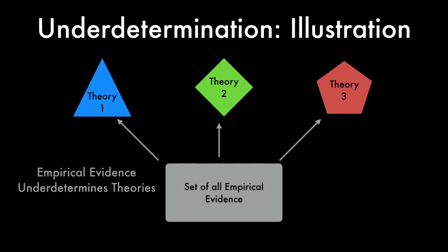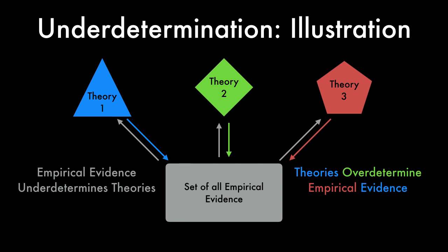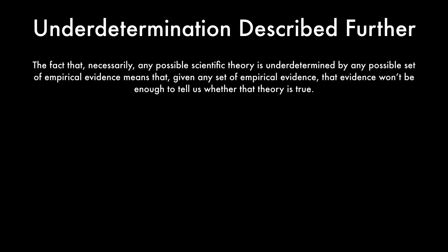This also means that theory 1, theory 2, and theory 3 over-determine the empirical evidence. The fact that necessarily any possible scientific theory is under-determined by any possible set of empirical evidence means that, given any set of empirical evidence, that evidence won't be enough to tell us whether a given theory is true.